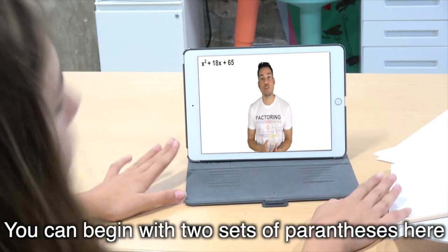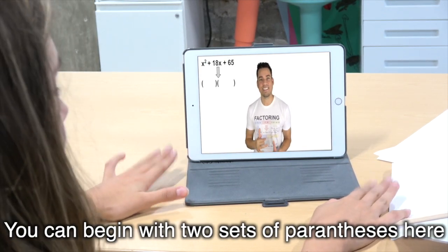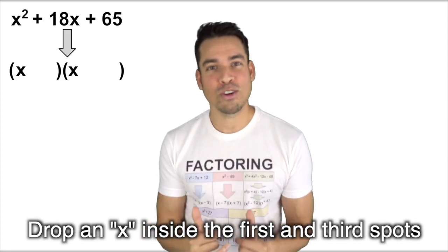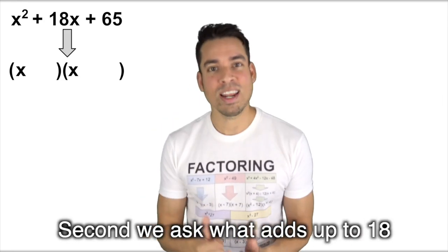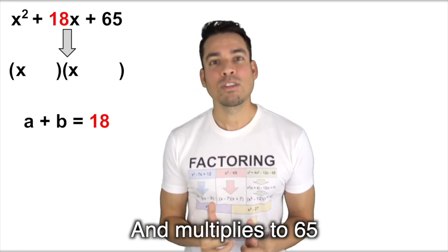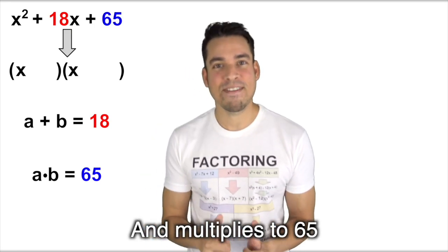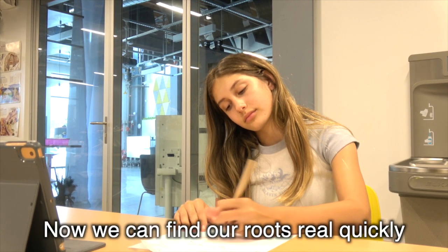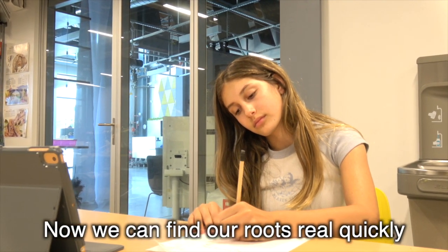You can begin with two sets of parentheses here, dropping X's inside the first and third spots. Second, we ask what adds up to 18 and multiplies to 65. It's 5 and 13.